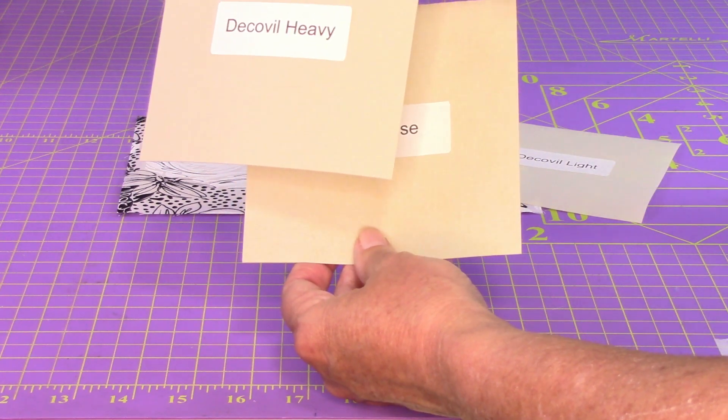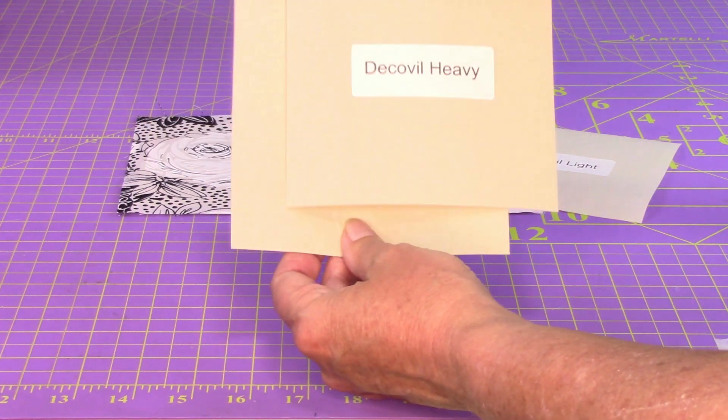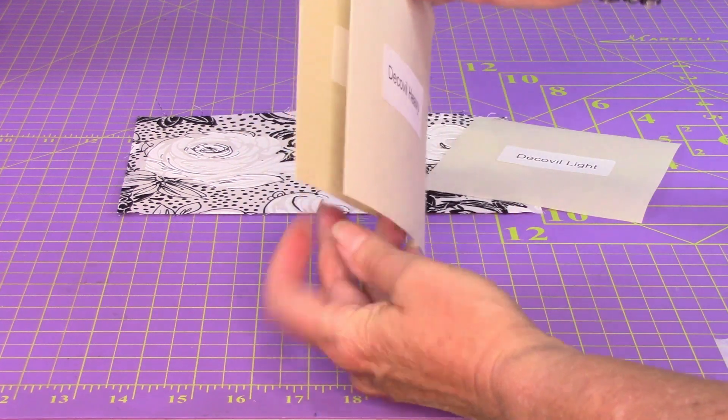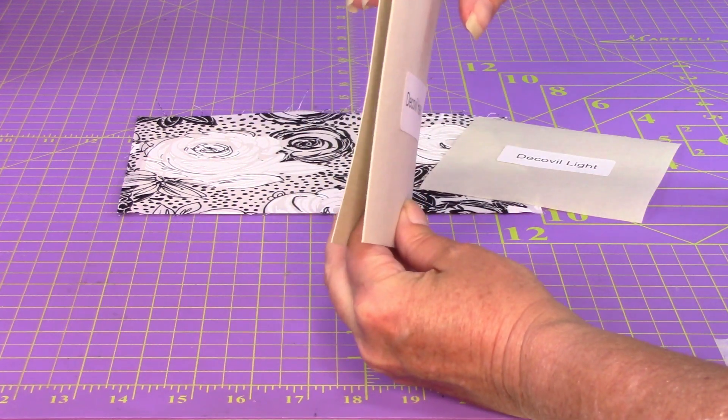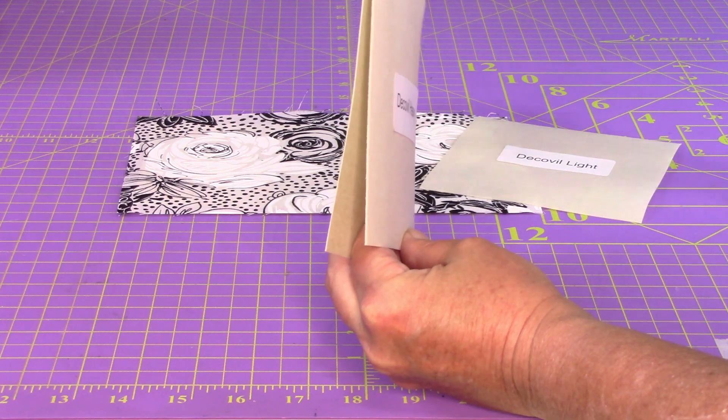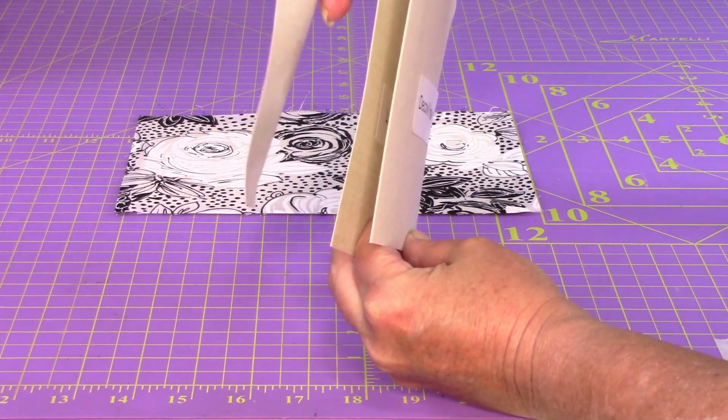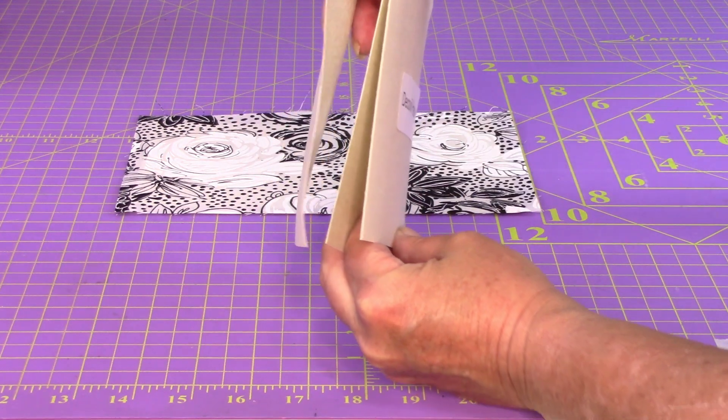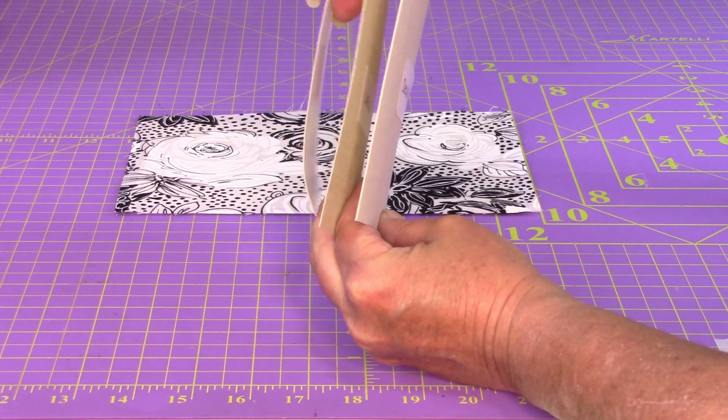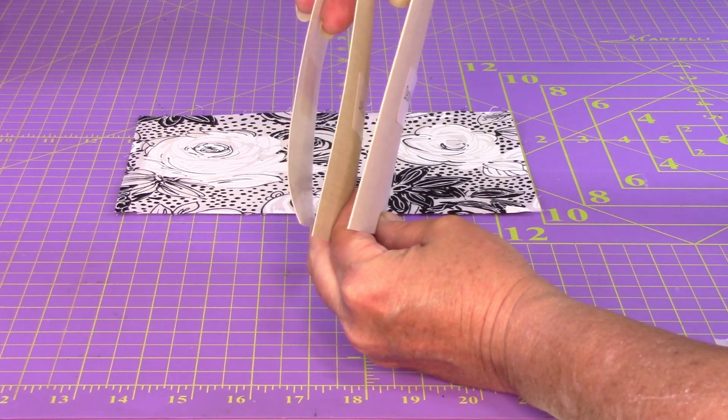This is DecaVille Heavy. Okay. Let's see if I can give you a good view. Okay. There we go. So by this you should be able to see the three thicknesses.